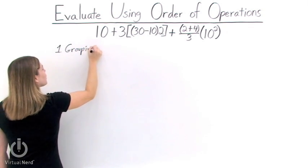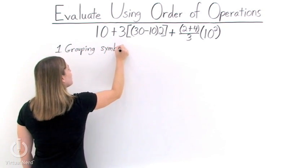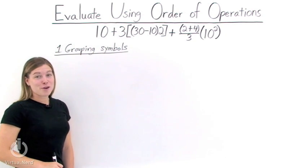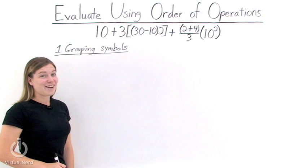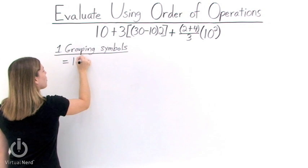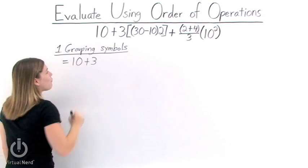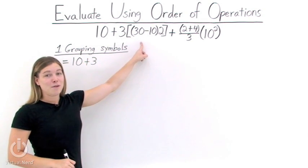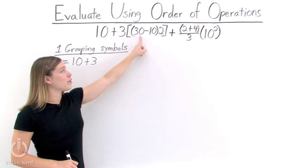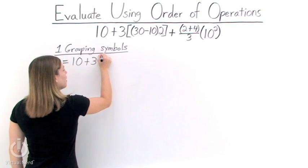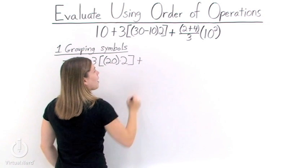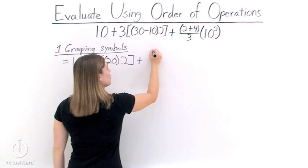Our first step is going to be eliminating any grouping symbols in our problem. Looking at our expression, we do have a few. When dealing with multiple grouping symbols like we do right here, we need to evaluate the innermost grouping symbol first. So we need to take 30 minus 10 first, and 30 minus 10 is 20. We also have 2 plus 4, which equals 6.